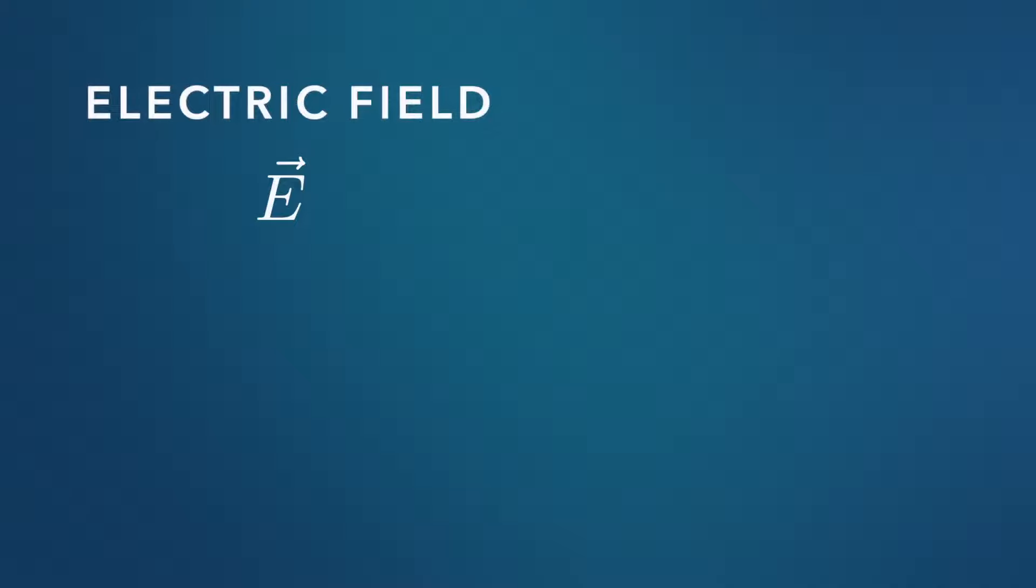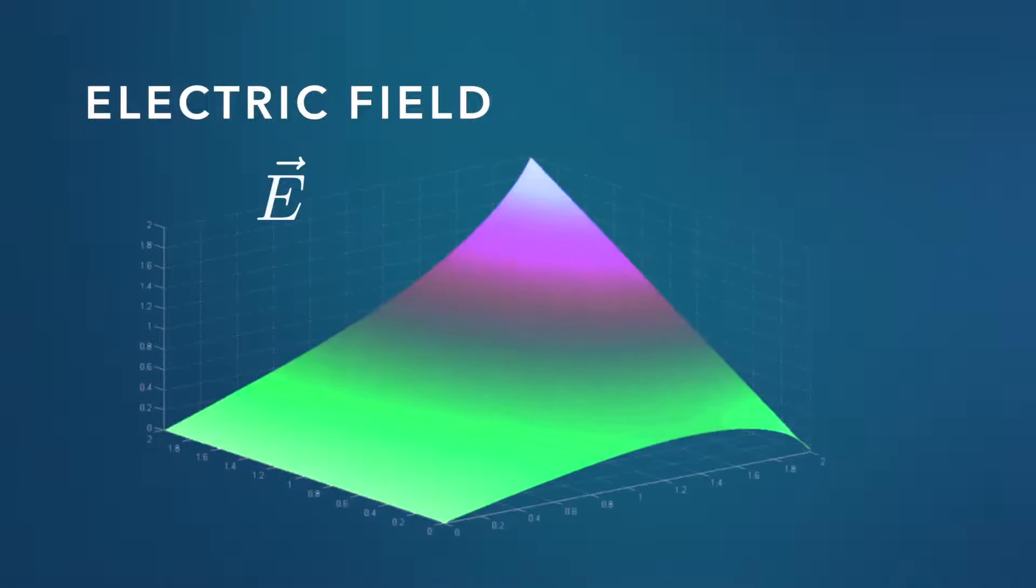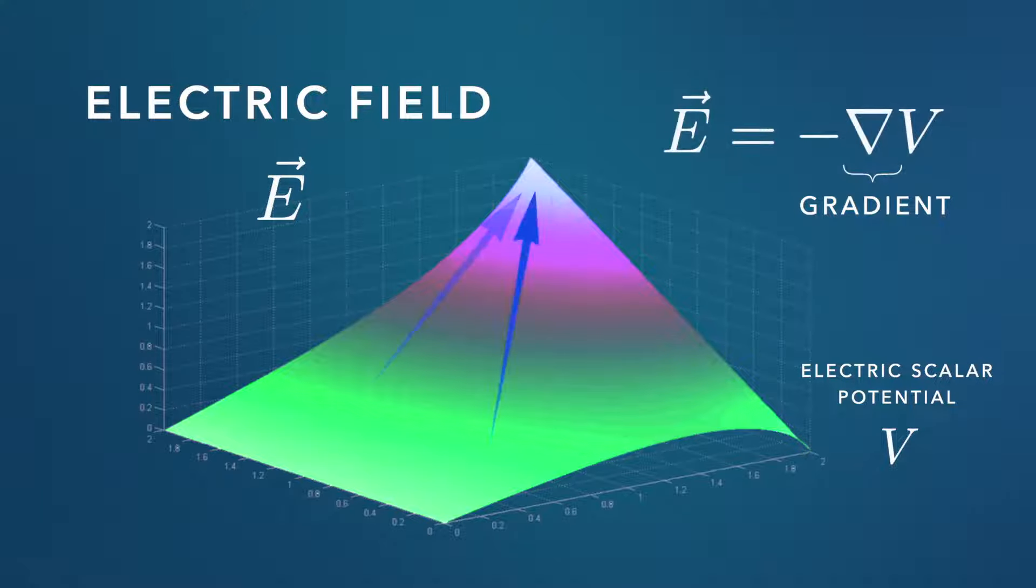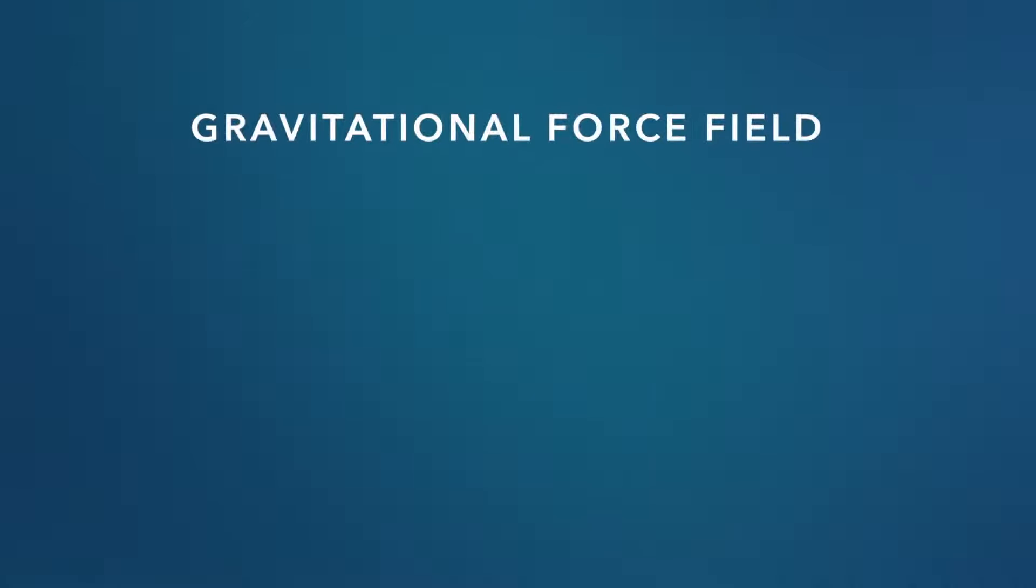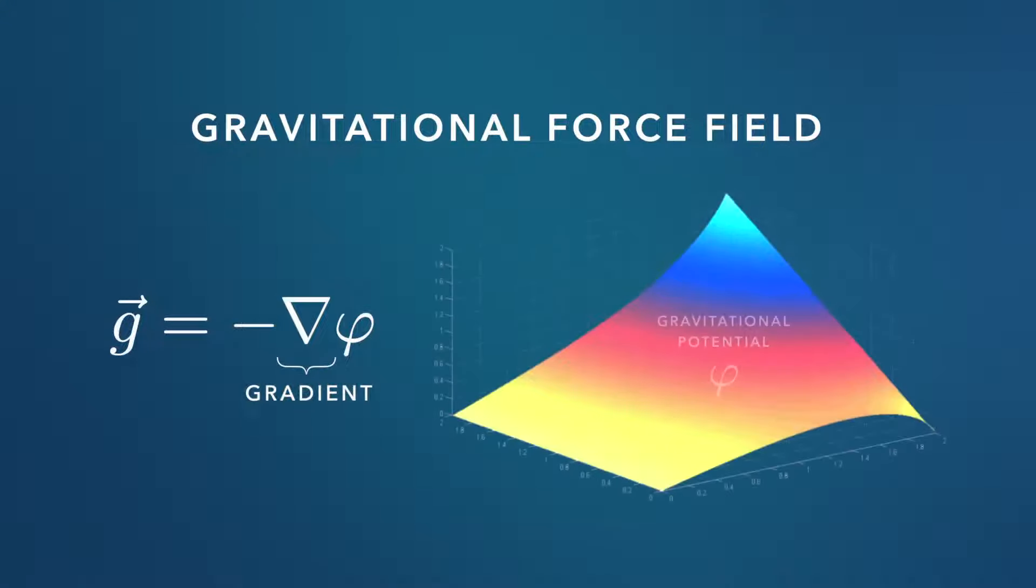Now the electric field, on the other hand, comes from a gradient in the underlying electric scalar potential. Gradient simply means that the value of the electric scalar potential varies over some distance, and the electric force field just points along that gradient. And similarly, the gravitational force field arises from a gradient in the underlying gravitational potential.